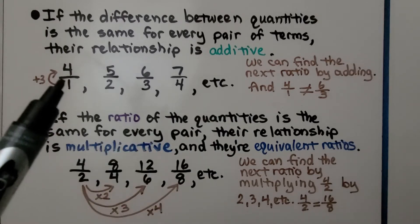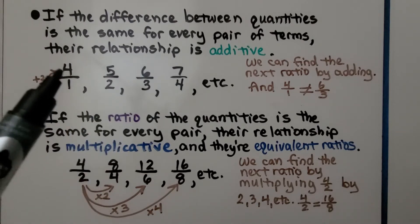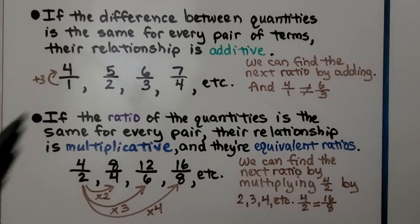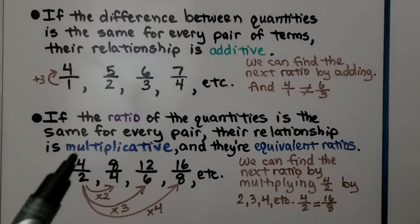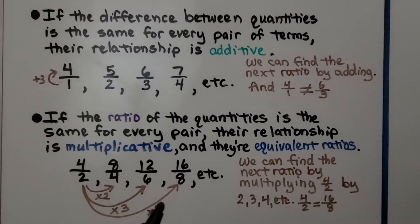If you look at 4 over 1, it's not equivalent to 6 over 3. 6 divided by 3 is 2, and 4 divided by 1 is 4. If the ratio of the quantities is the same for every pair, their relationship is multiplicative and they are equivalent ratios. We can find the next ratio by multiplying 4 halves by 2, then by 3, then by 4, and so on. For example, 4 halves is equal to 16 eighths — they're equivalent ratios.